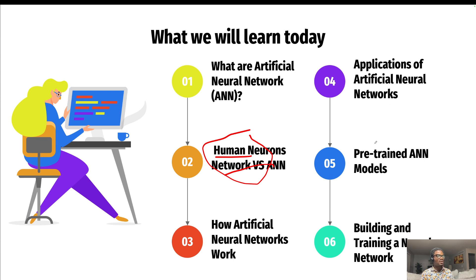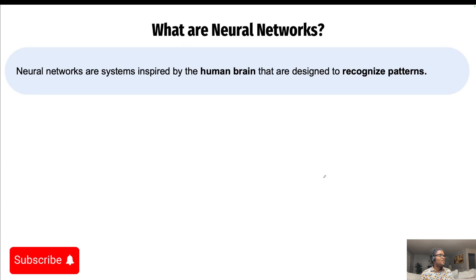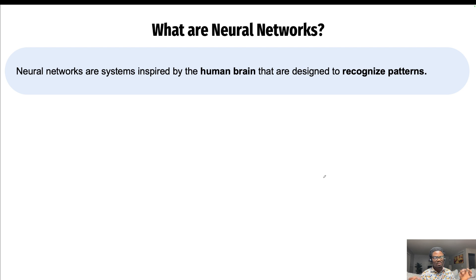We're going to learn how artificial neural networks work, look at some applications of neural networks, discuss pre-trained ANN models, and then we're going to talk about building and training our own artificial neural network. So the first thing is: what are neural networks? They are a system inspired by the human brain that are designed to recognize patterns.